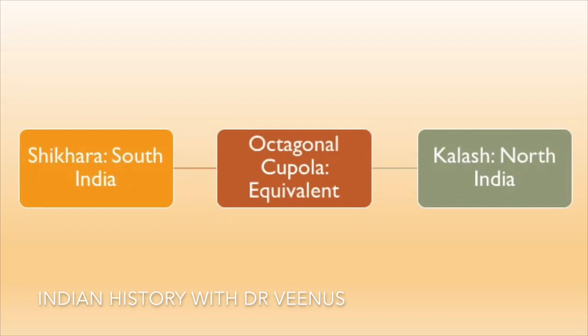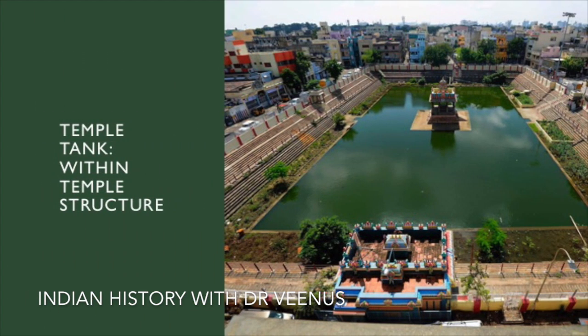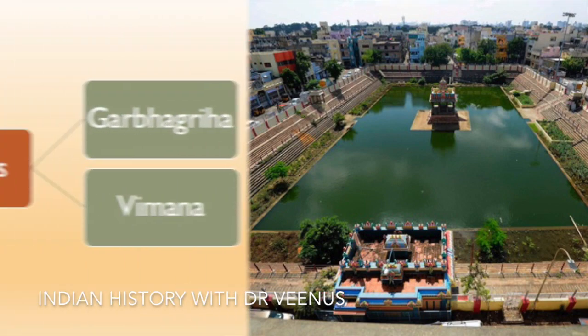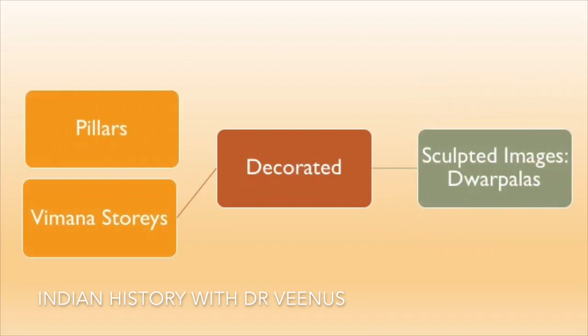The Shikhar in South India, which is an octagonal cupola, is equivalent to the Kalash of North India. A temple tank of fresh water is within the enclosed structure of the temple. A pillared hall called a Mandap precedes the Garbhagriha and the Viman. The pillars and Viman stories are decorated with sculpted images of Dwarpalas.